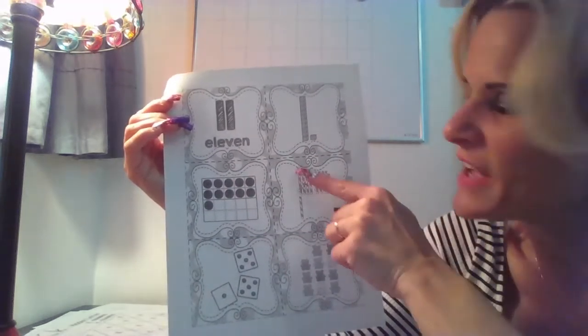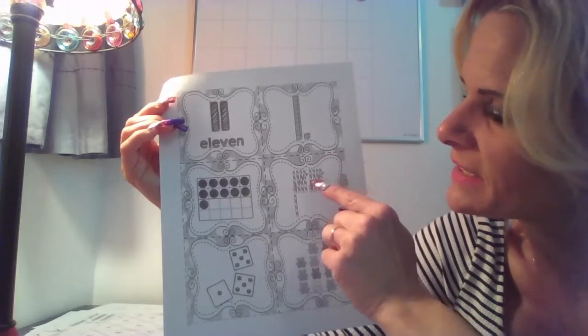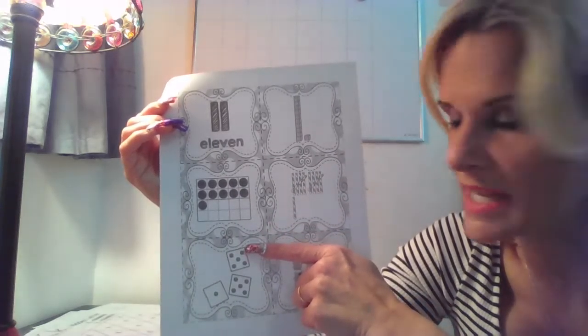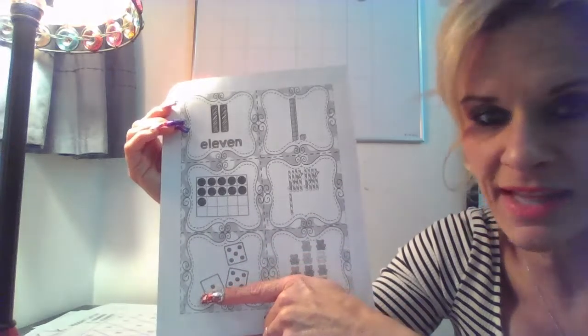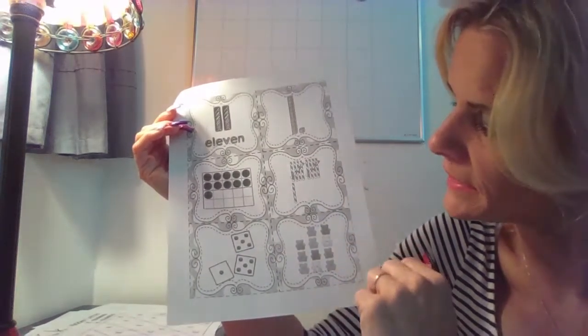Oh, here's those tallies. 5, 10, 11. We could see it on dice. 5, 10, 11, or we could count 11 bears.